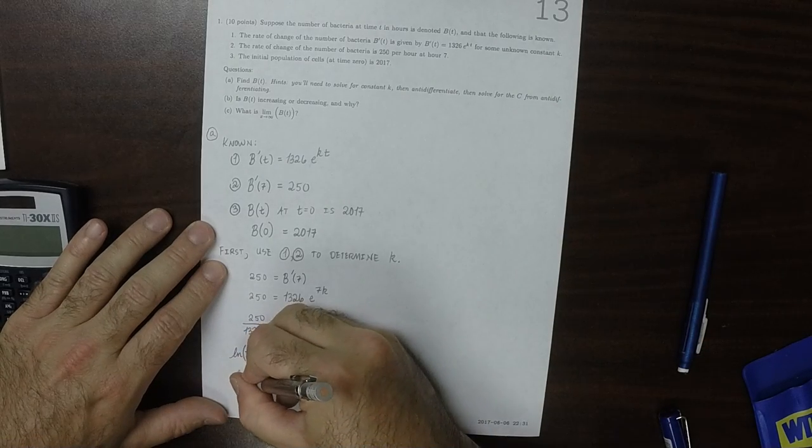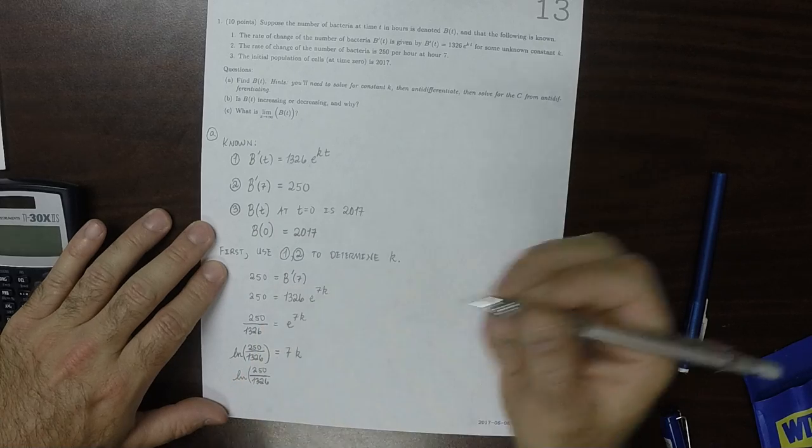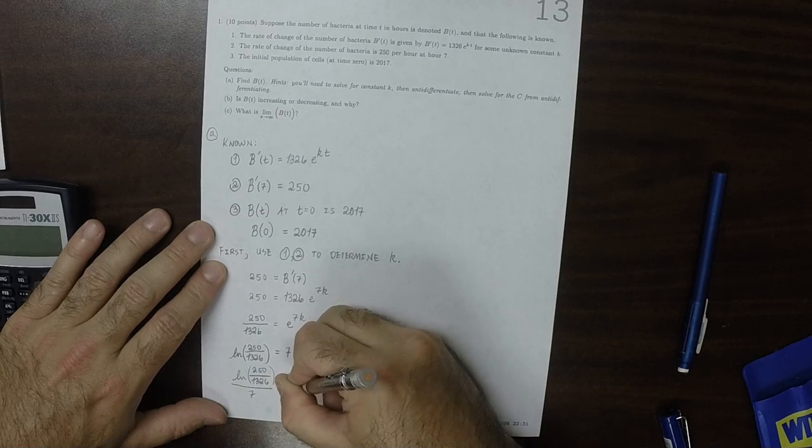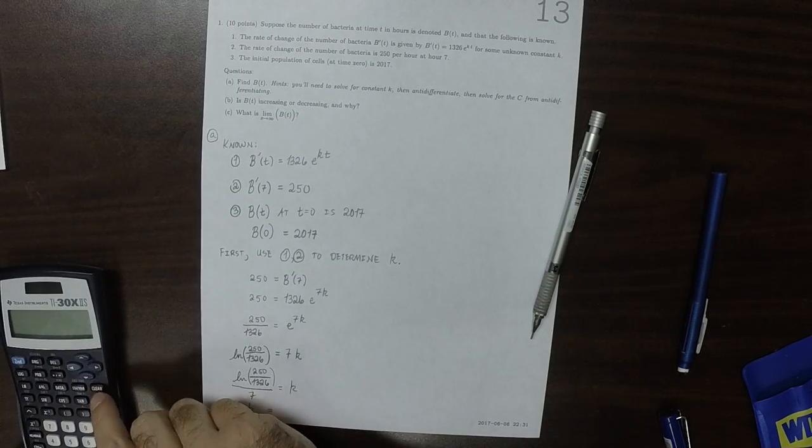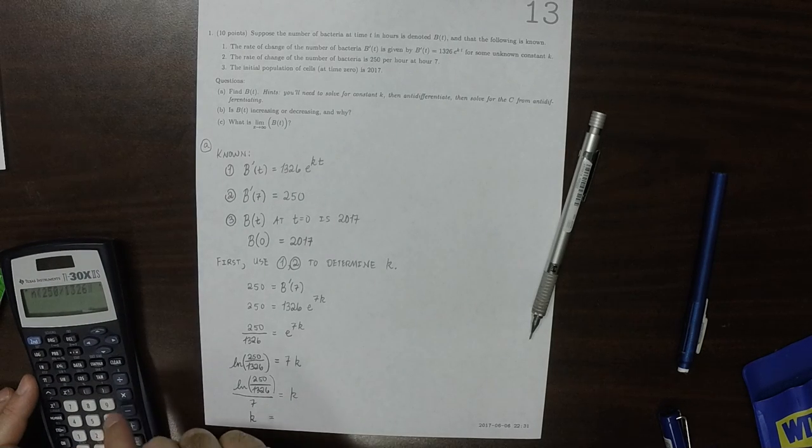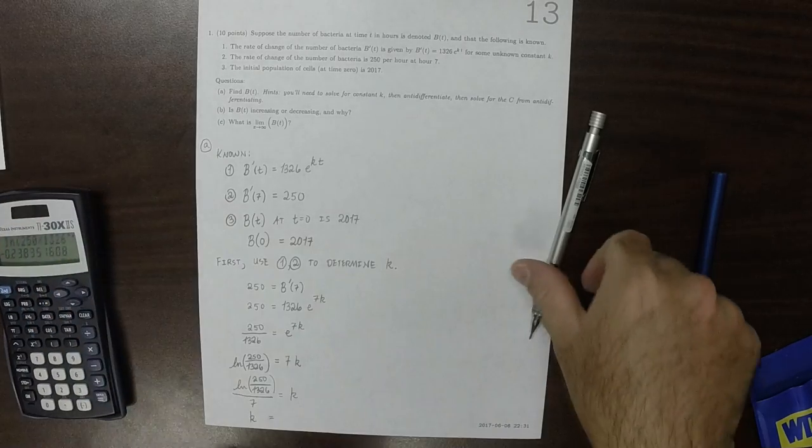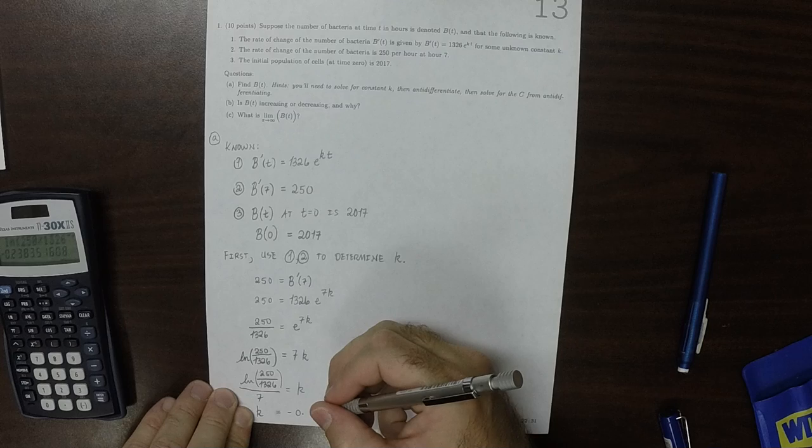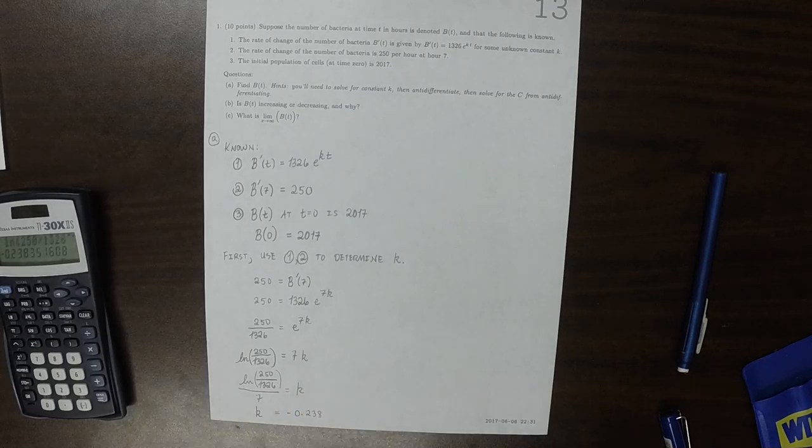So that the natural log of 250 over 1,326, and then all of that over 7 is k. And then we could numerically approximate that with the calculator. So that's the natural log 250 over 1,326 divide by 7. So we'll round it to three places. k is negative 0.238.